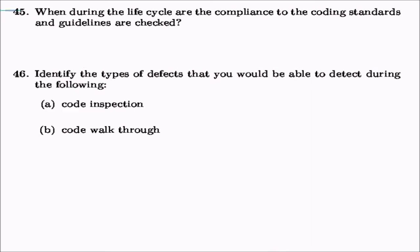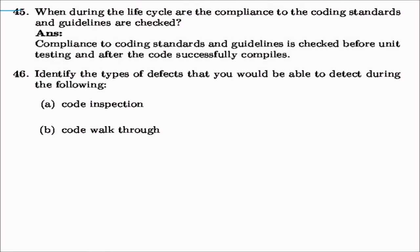When during the life cycle are compliance with coding standards and guidelines checked? Compliance is checked before unit testing, after the code successfully compiles. Compilation removes syntax errors, and once compiled, you can proceed to check coding standards and guidelines.